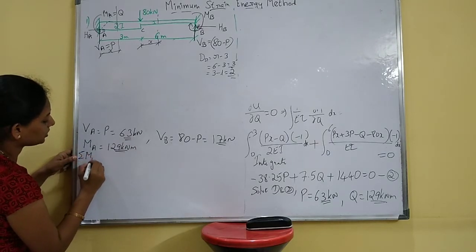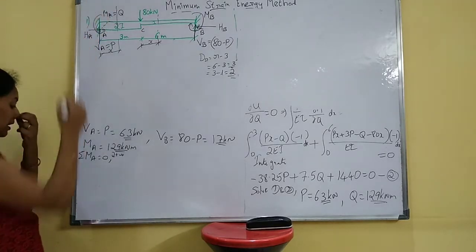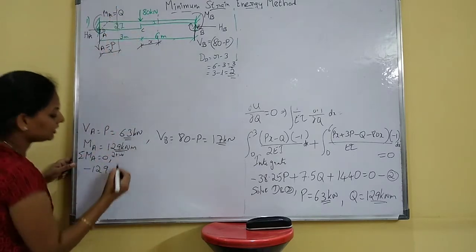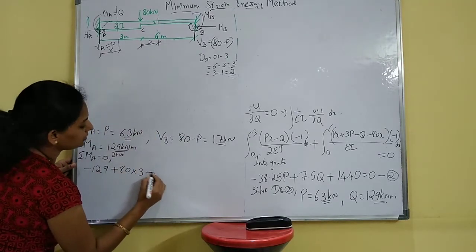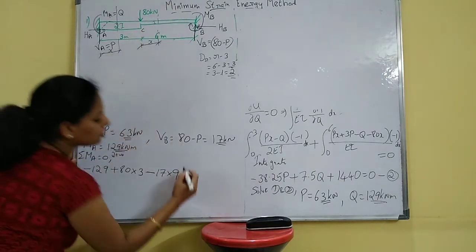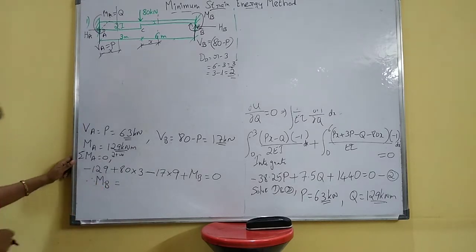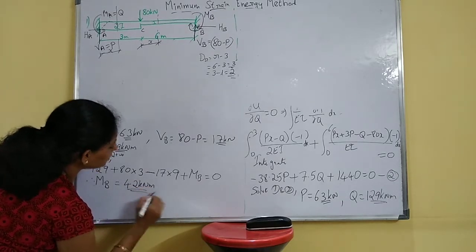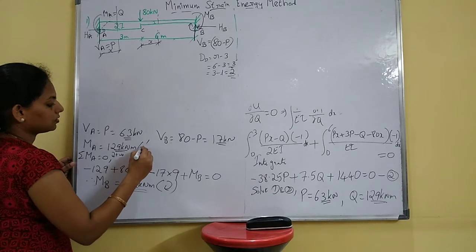Find M_B using the equilibrium equation ΣM_A = 0 (clockwise positive): −129 + 80×3 − 17×9 + M_B = 0. Solving, M_B = 42 kilonewton meter — positive, so clockwise as assumed. M_A is anticlockwise.